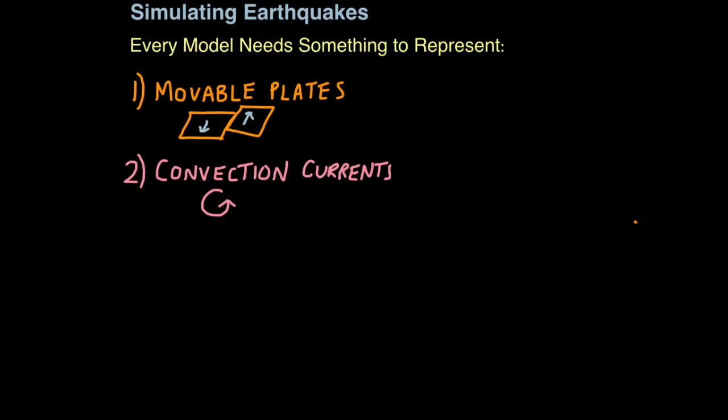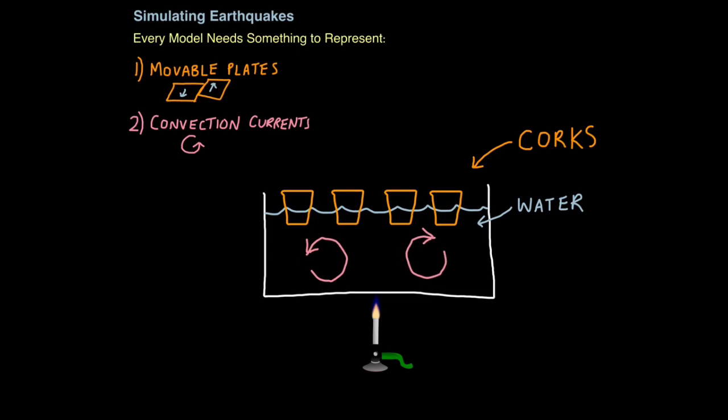So it's often common practice when a scientist is trying to work out a solution to a problem, that they build a model. In exams, they quite regularly throw different models at you for you to interpret. In every model, there'll be something that represents movable plates and convection currents, the currents that provide the force that move these plates. Your job is to work out which bit relates to what.